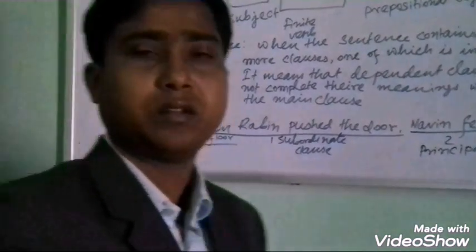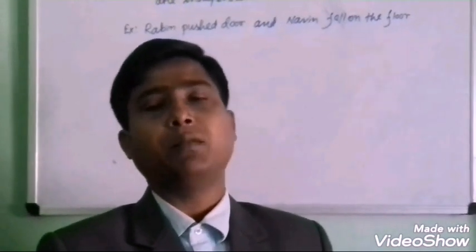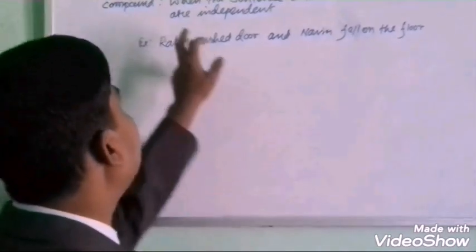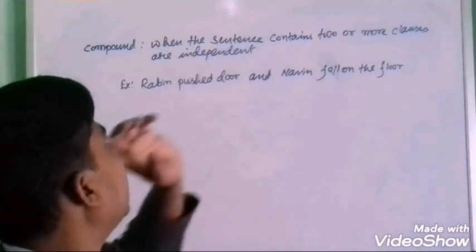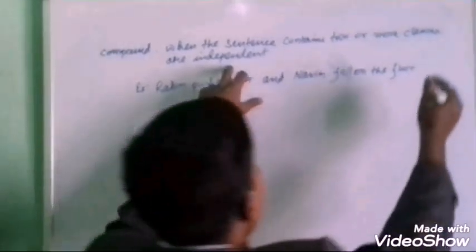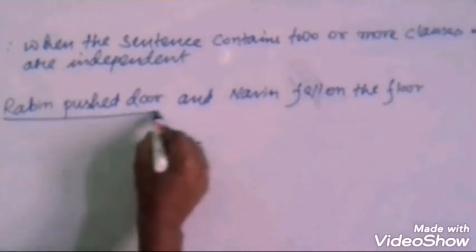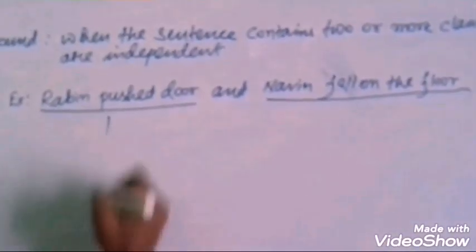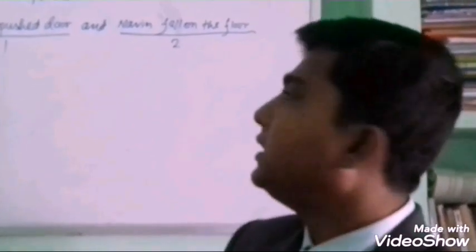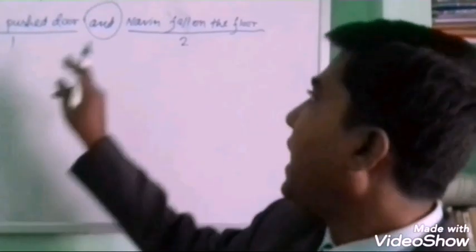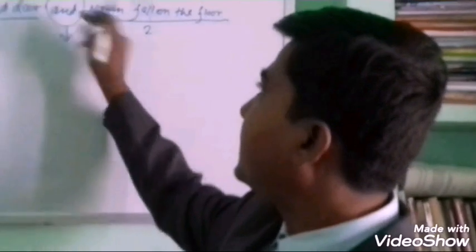Compound Sentence. What is meant by Compound Sentence? Compound Sentence means when the sentence contains two or more clauses which are independent, it is called a Compound Sentence. For example: 'Raveen pushed the door and Nubing fell on the floor.' In this sentence we can see two parts: 'Raveen pushed the door' and 'Nubing fell on the floor.' These two parts have been joined by AND, where AND is the conjunction. This conjunction is joining these two parts.